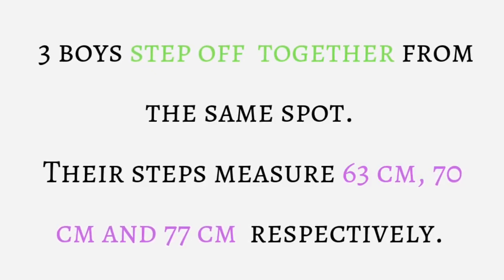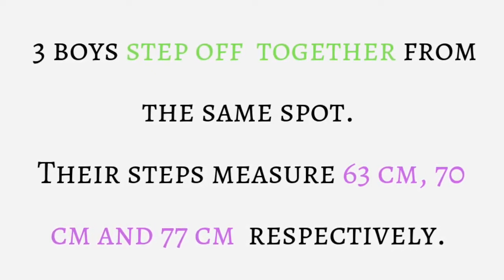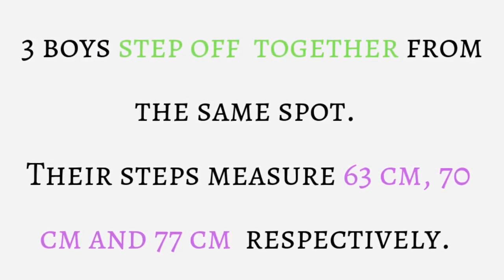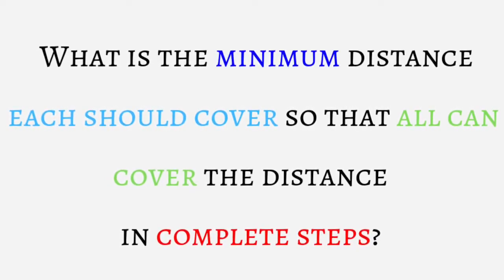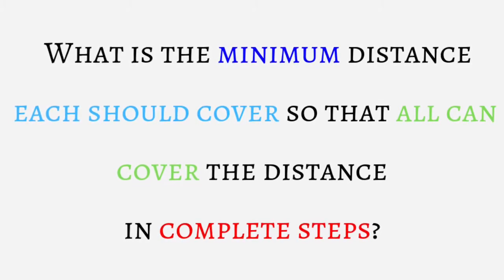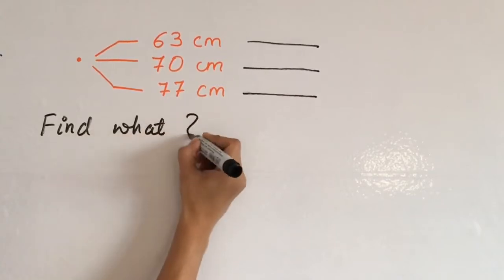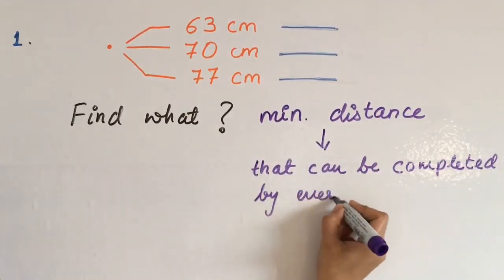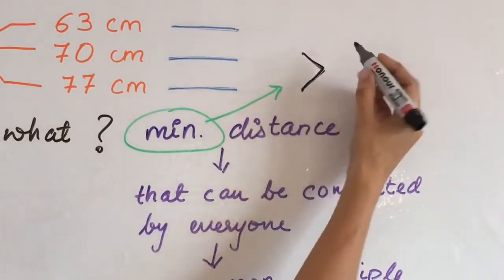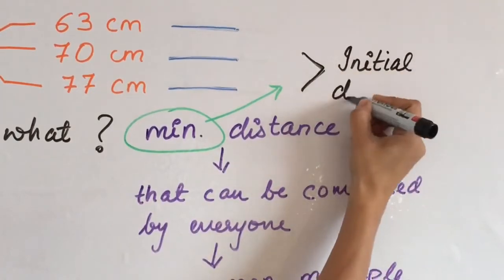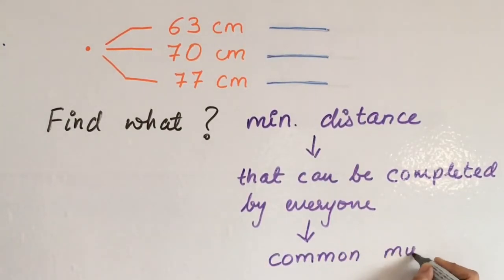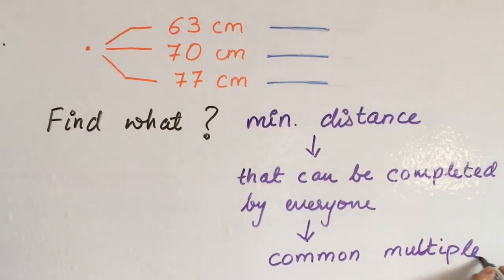Next question. 3 boys step off together from the same spot, their steps measure 63, 70 and 77 cm respectively. What is the minimum distance each should cover so that all can cover the distance in complete steps? What is the minimum distance that can be completed by everyone? This minimum distance will be greater than 63, 70 and 77 cm. That means in three numbers we will find a common multiple. That is, we will find the LCM.